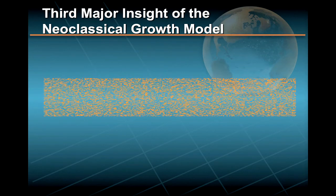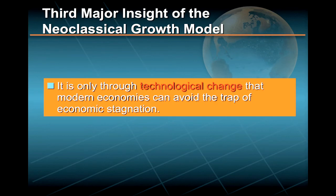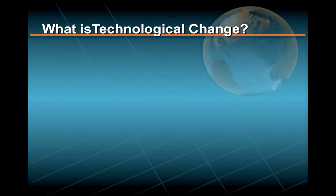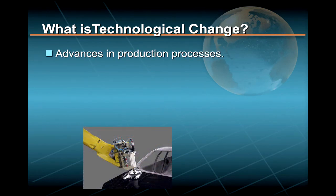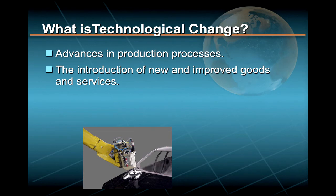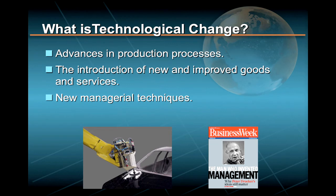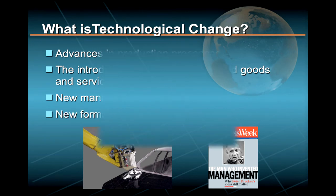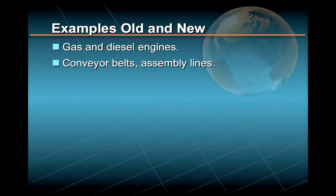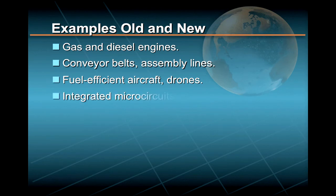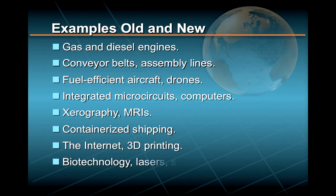This leads to the third major insight of the neoclassical growth model. It is ultimately only through technological change that we can avoid the trap of economic stagnation. Technological change represents both advances in production processes and the introduction of new and improved goods and services. It also includes new managerial techniques as well as new forms of business organization. For example, gas and diesel engines, conveyor belts, and assembly lines were significant developments of the more distant past, while more recently we have bigger, faster, and more fuel-efficient aircraft, integrated microcircuits, computers, xerography, containerized shipping, and the Internet, not to mention biotechnology, lasers, and superconductivity.